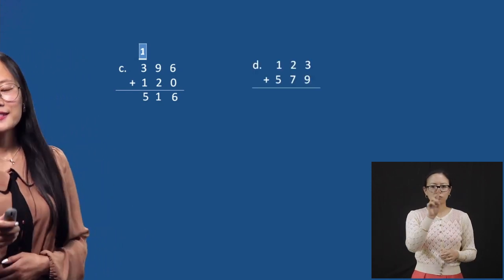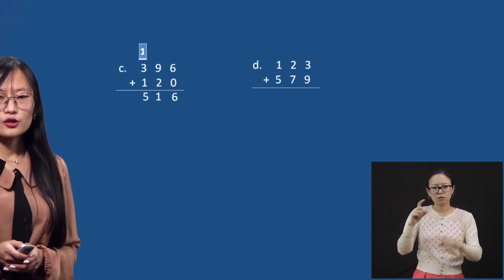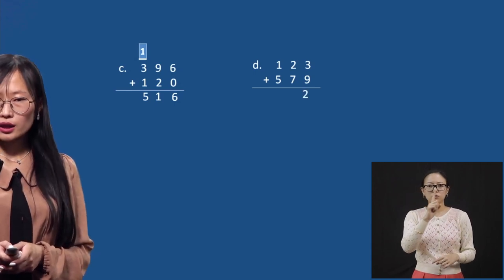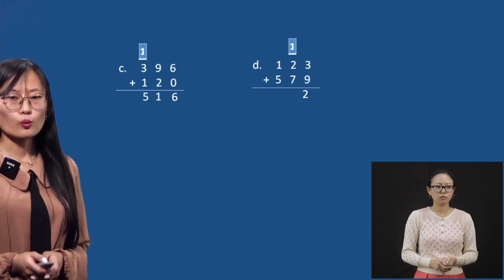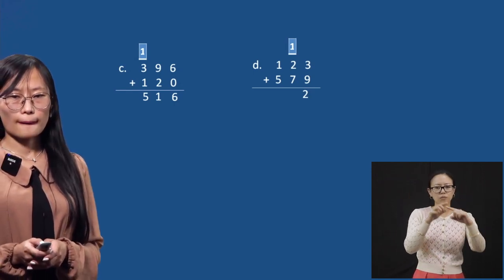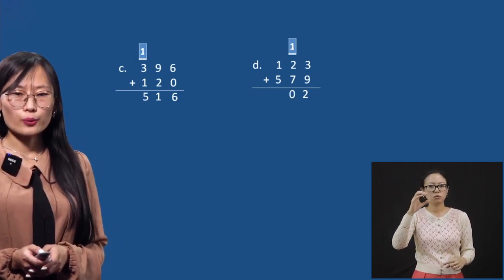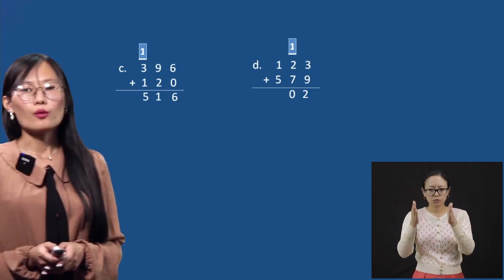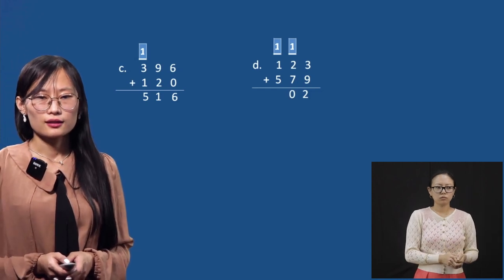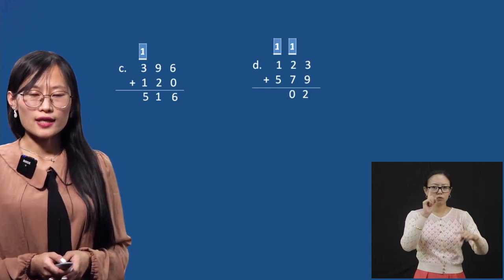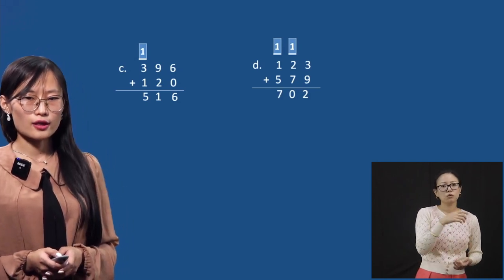123 plus 539. Nine plus three is 12 — write two in ones place, one carry over. One plus two is three, three plus seven is ten — write zero in tens place, one carry over. One plus one is two, two plus five is seven. The answer is 702.